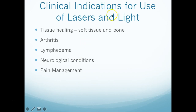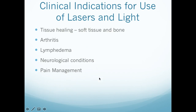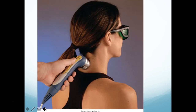The clinical indications for use of lasers and light include tissue healing — both soft tissue and bone — arthritis, lymphedema, neurological conditions, and pain management. In your book it will show very specific doses that have been approved and work really well if you follow those parameters.